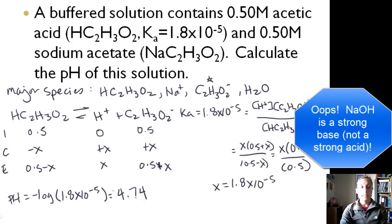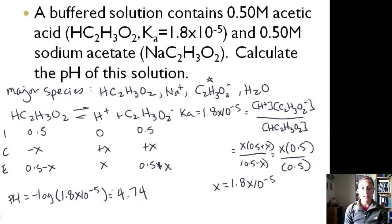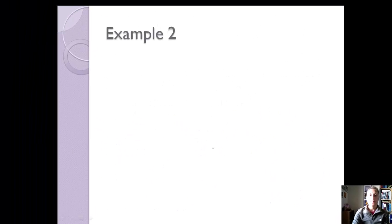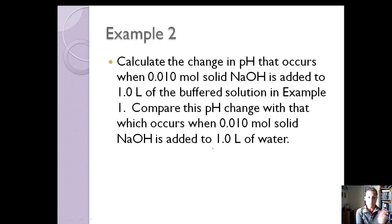That's very similar to the example we did in 15.1. The only difference from Chapter 14 is that concentration of the salt. Now let's look at another example — we're going to calculate the change in pH that occurs when we add 0.01 moles of solid NaOH to one liter of the buffered solution from example one.